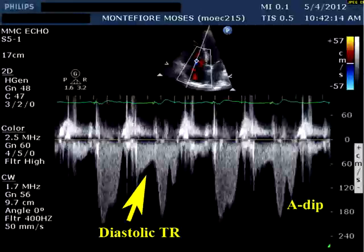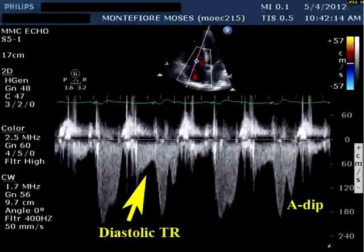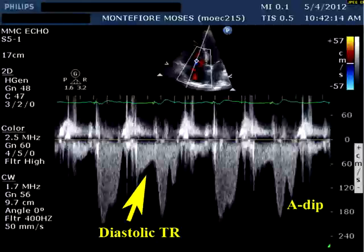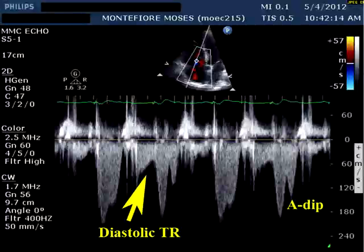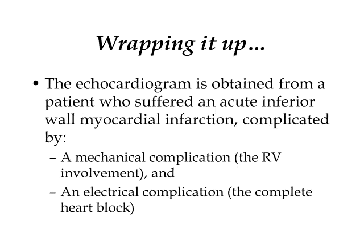In addition, there are periods where RA diastole is occurring without simultaneous RV systole, causing diastolic tricuspid regurgitation as right atrial pressure falls because of its own diastole. To wrap it up, this one echocardiogram demonstrates an acute inferior wall MI with both a mechanical complication — right ventricular involvement — and the electrical complication of complete heart block at the same time.